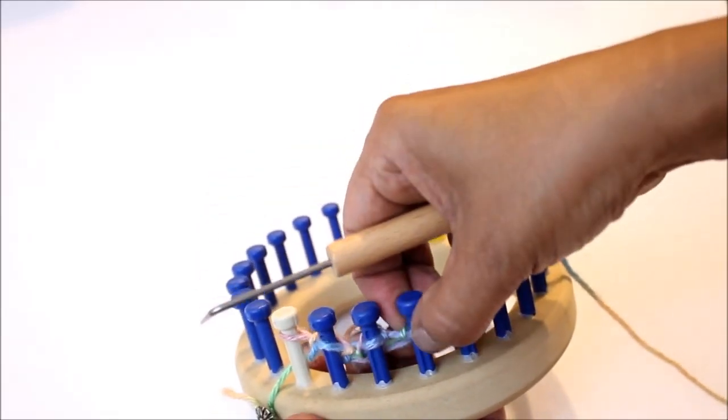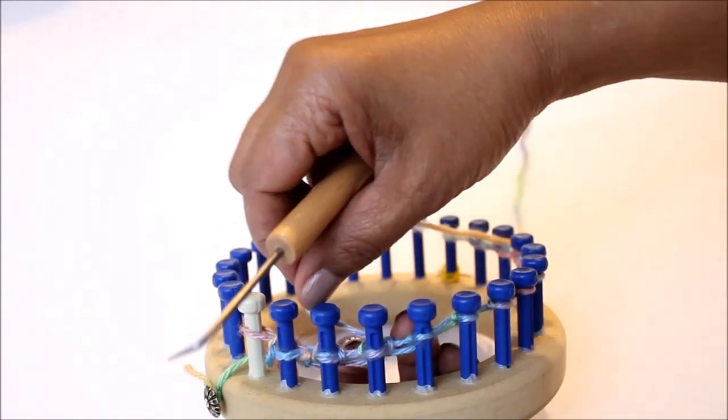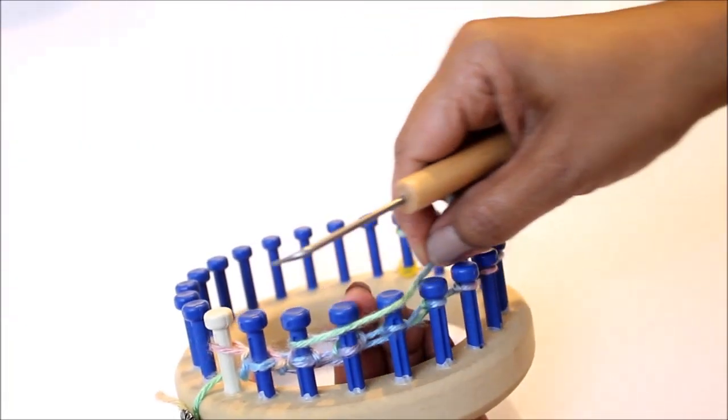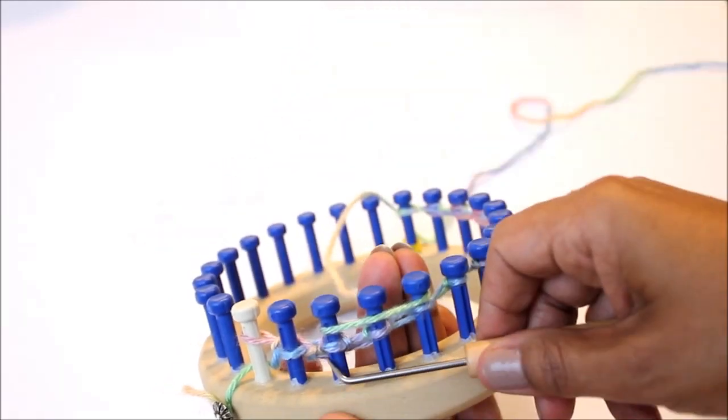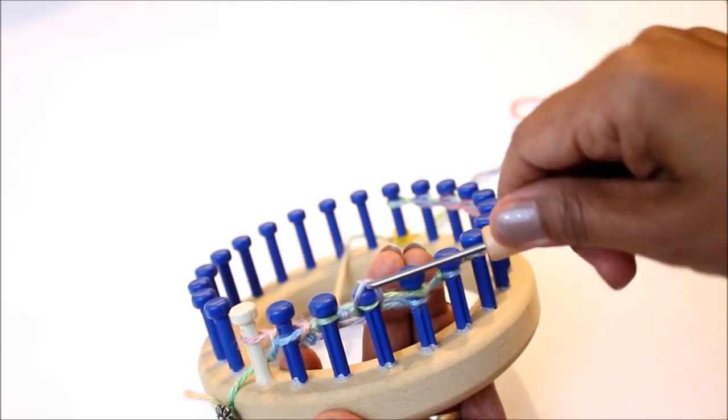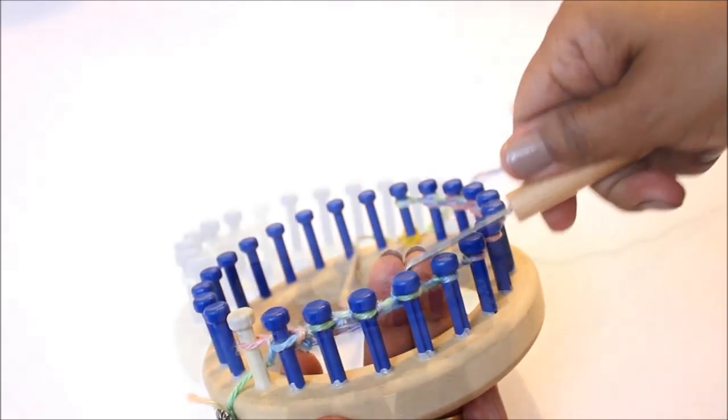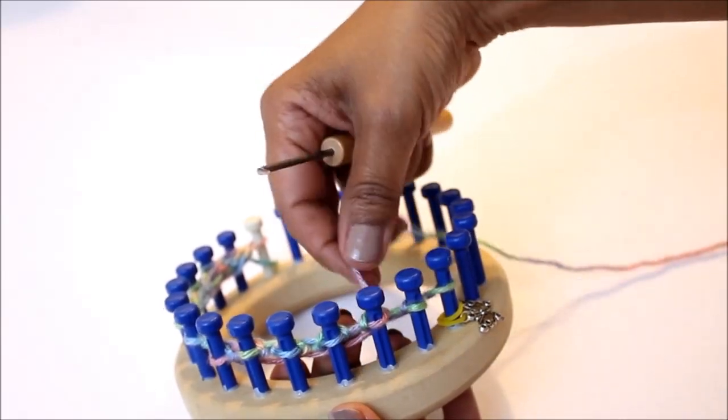So again this is now your new peg two and you're going to go back to peg one from behind and wrap pegs one, two, and three. This is the mock crochet stitch okay and you're going to knit off one, two, and three and just like I said before you're doing it in that order because it's easier.